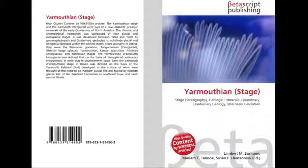Later, the Yarmouth Yarmouthian stage in Illinois was defined on the basis of the Yarmouth Paleosol, a soil developed in the surface of what were thought at that time to be Kansan glacial tills and buried by Illinoian glacial tills of the Glasford Formation in southeast Iowa and east central Illinois. At this time, it was incorrectly presumed that the Yarmouth Paleosol formed during a single interglacial stage separating the Illinoian glaciation from the older Kansan glaciation.